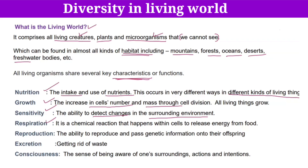The next characteristic is respiration. Respiration is a chemical reaction that happens within the cell. The main aim of respiration is to produce energy. Through respiration, we get energy that is stored in the mitochondria in the form of ATP — adenosine triphosphate. When cells need to perform their functions, they get this energy from the mitochondria. That is why mitochondria are also called the powerhouses of the cell.